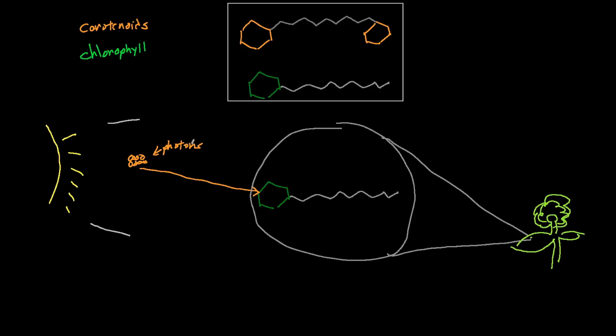So we have this orange photon coming from the sun. And it's bouncing onto the head of this chlorophyll. And as I already said, the chlorophyll has electrons. The electrons are what keep the atoms inside the chlorophyll together. And when these electrons get excited, it raises electrons to a high energy state.